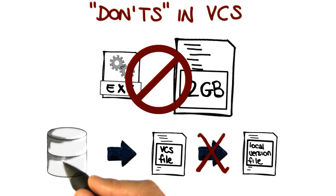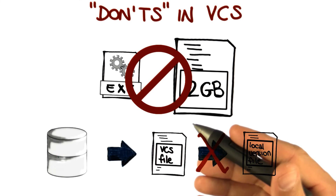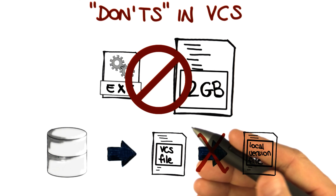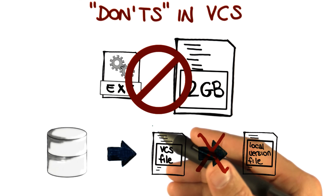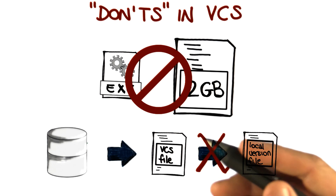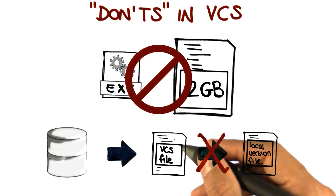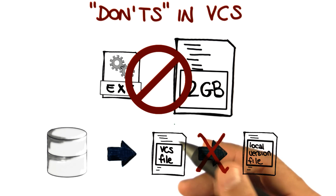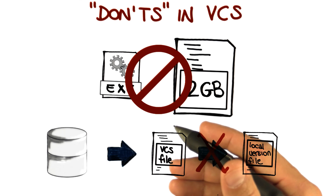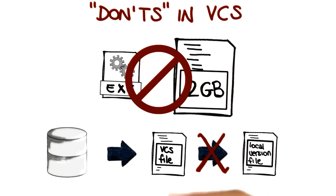Trust the version control system to be able to manage your versions. You can always save it, commit it, retrieve previous versions, and you'll be able to do everything that you can do by copying the file yourself — and even more. So again, trust the VCS.